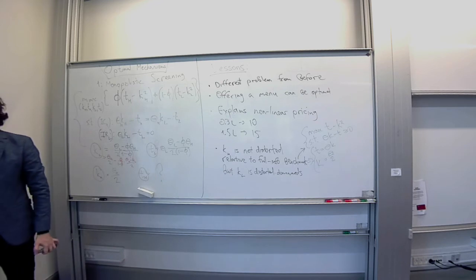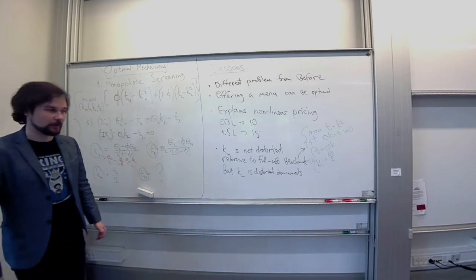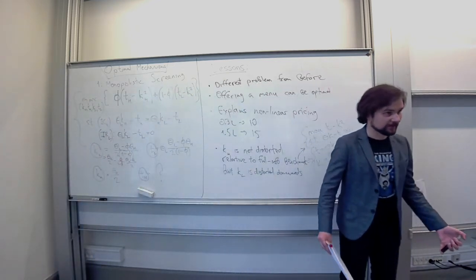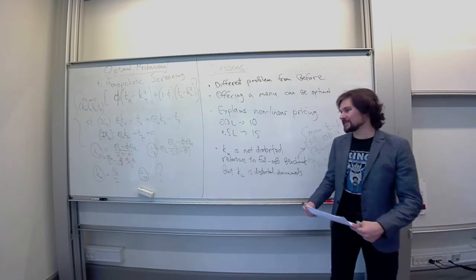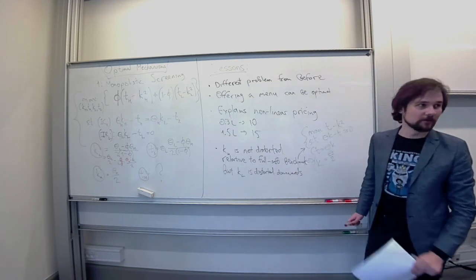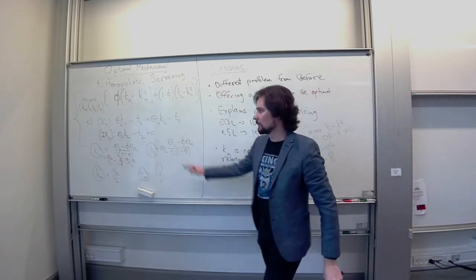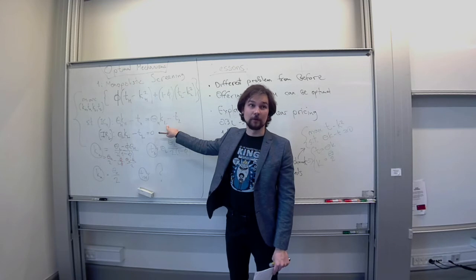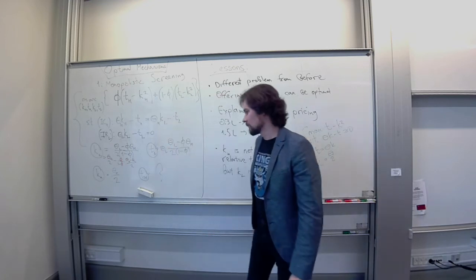Why does it happen? Why is our KL distorted downwards? The answer is to provide incentives. This is the whole thing. This is the only dimension in which these two problems differ. In that problem, we have to provide incentives to the types to reveal who they are.